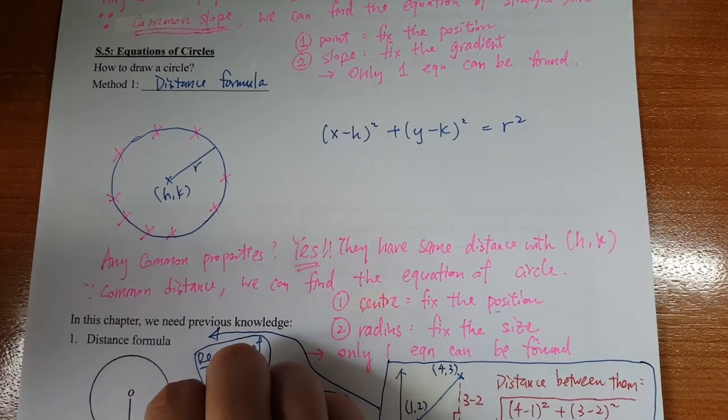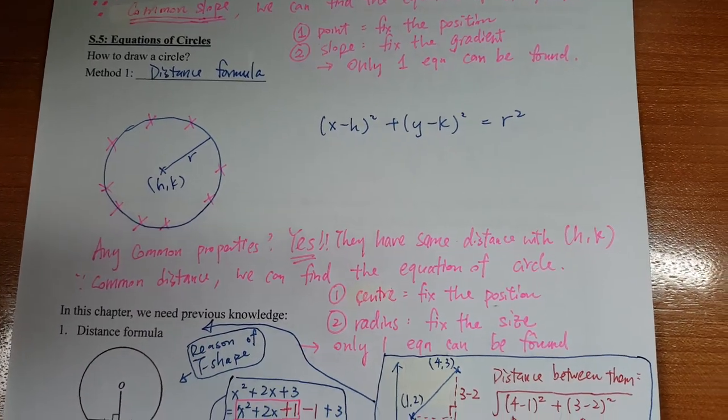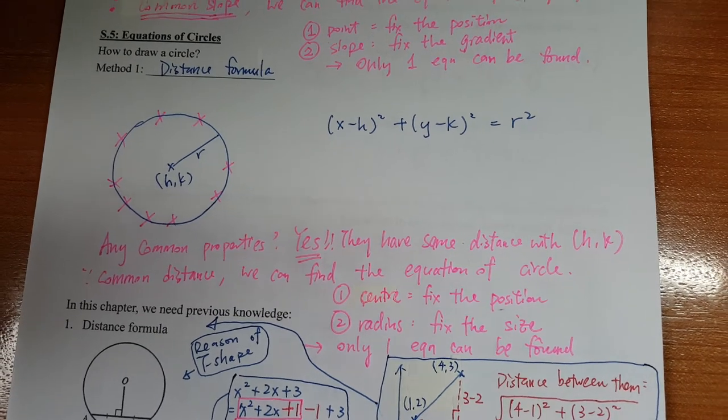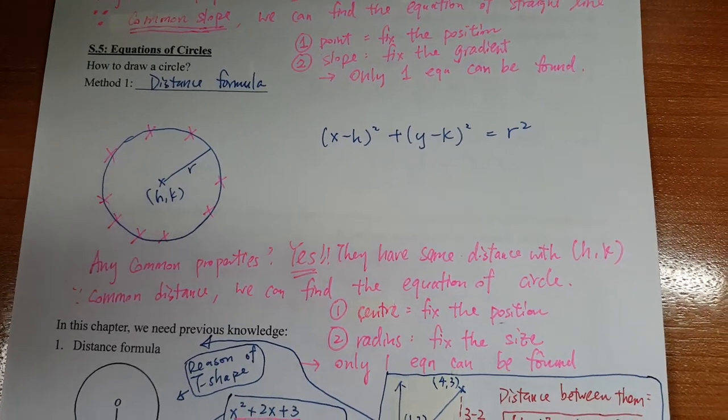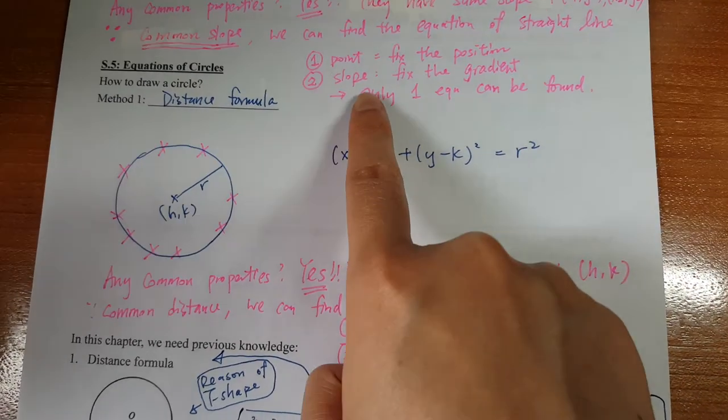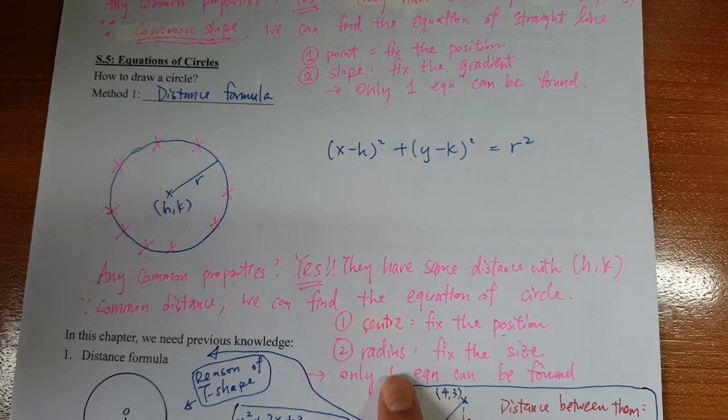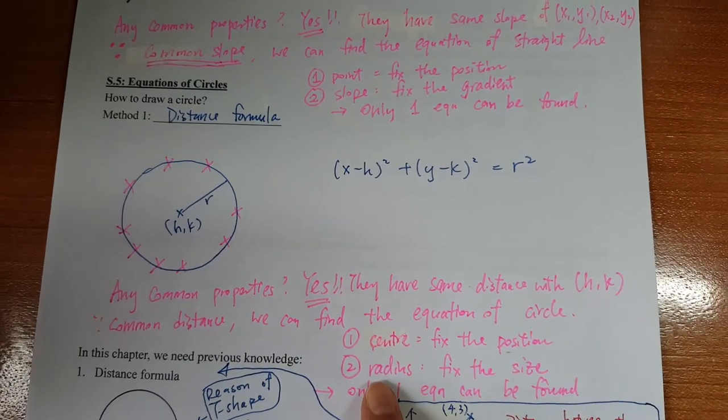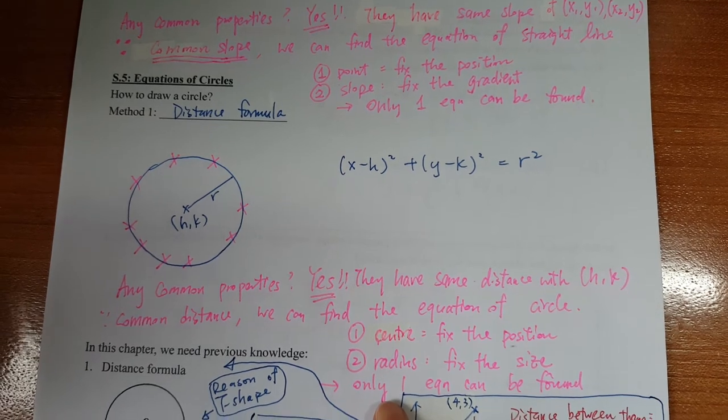Because of the common distance you can find the equations. So once again, you can use two informations: the center would fix the position, which is the same as the previous one, and also the radius would fix the size of the circle. That's why one and only one equation can be found as well.